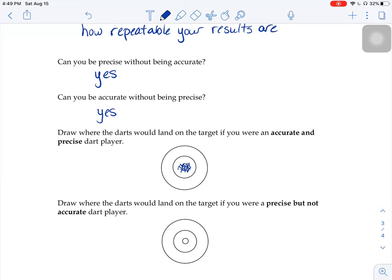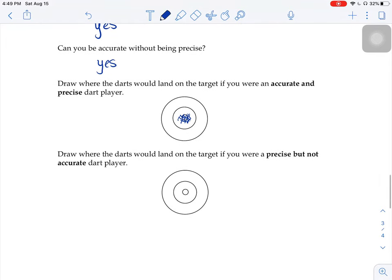What if you were precise but not accurate? You're getting the wrong answer over and over again. So, maybe you'd hit this spot over and over again, right? You're not very accurate because you're not getting the right answer, but you are precise because you're getting repeated results.